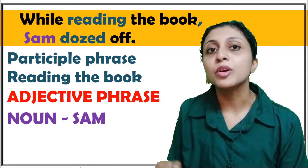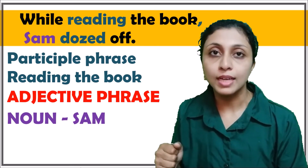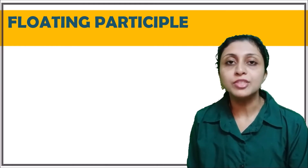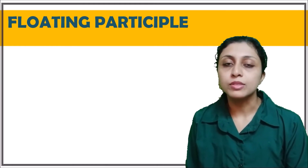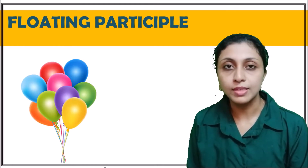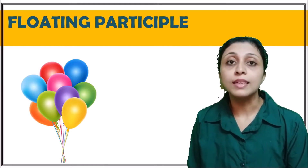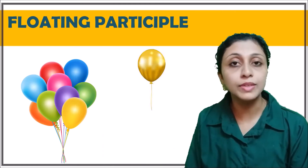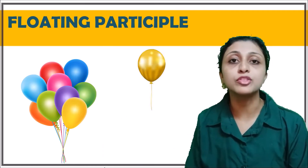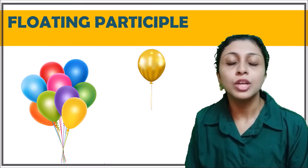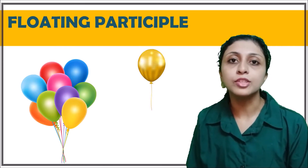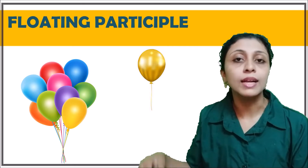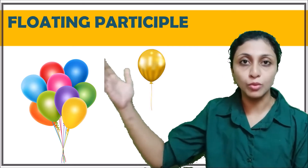Now let's get into the topic of the floating participle. Imagine a bunch of balloons tied to the ground, and then there is another balloon flying away, separate from the rest. There is no connection between that balloon and the others — it is floating alone on its own.